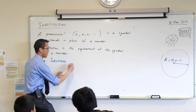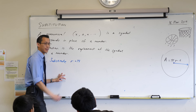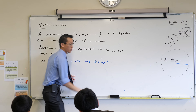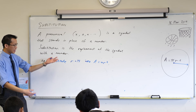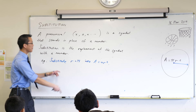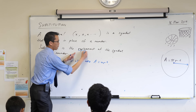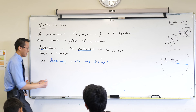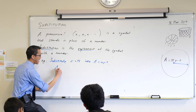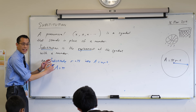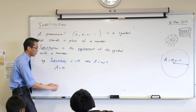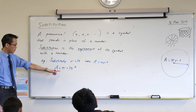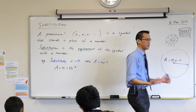If I substituted r equals 15 into A equals pi r squared — what would that mean? Well, instead of saying r, every time I see r I'm going to replace it — there's that word — I'm going to substitute it with the number, with the value that it takes. So in this case that would be: A is equal to pi times 15 squared.